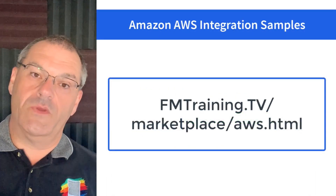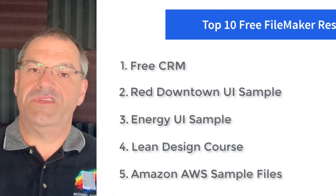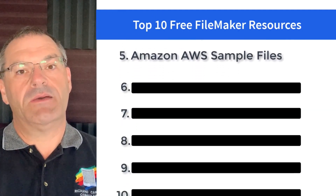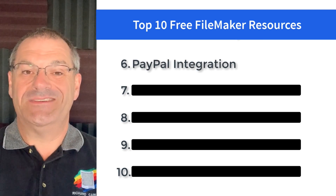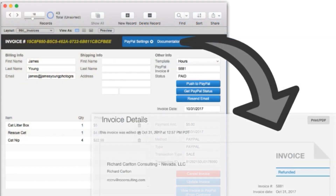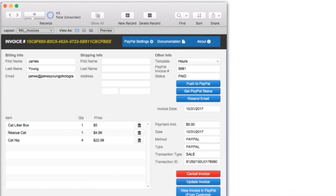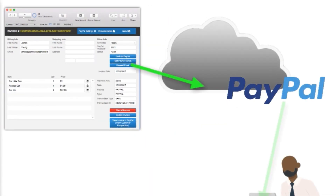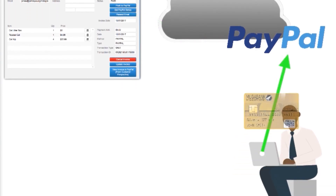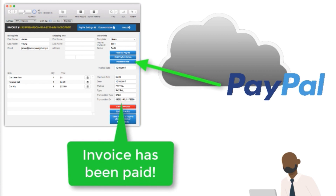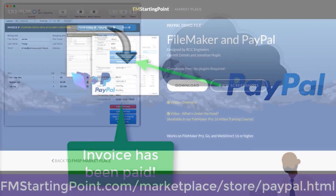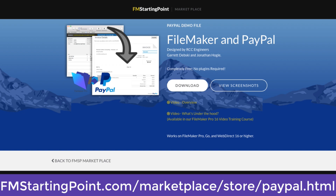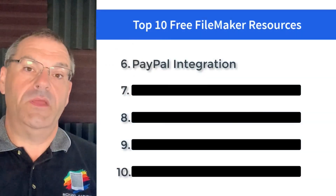Before we jump off the conversation of API integration, I want to talk about integration with PayPal. Imagine creating an invoice in FileMaker, then telling PayPal to communicate with the customer, email them, and collect the funds. Once the money is in your PayPal account, it sends back a notification to FileMaker so your file actually shows it's paid. This is a free sample — once again, unlocked. We've had to update this one two or three times because PayPal keeps changing the way they do things to improve security, so if something gets broken, we fix it.